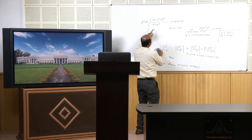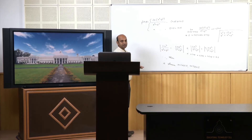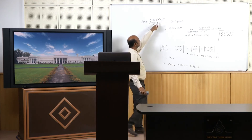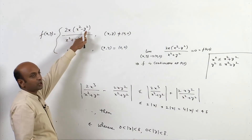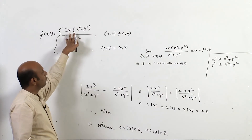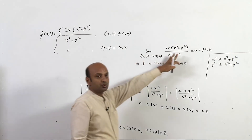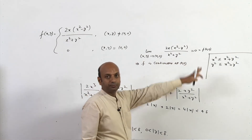This problem can also be solved by converting to polar coordinates: taking x = r cosθ, y = r sinθ, we can also show that this limit equals 0.